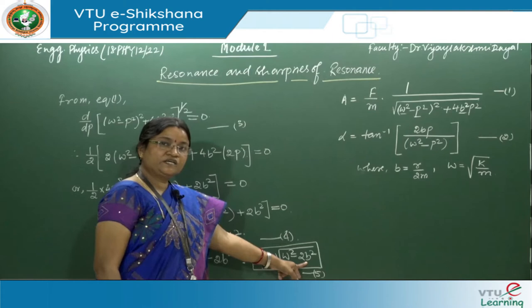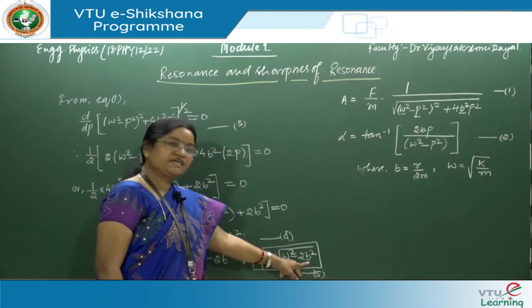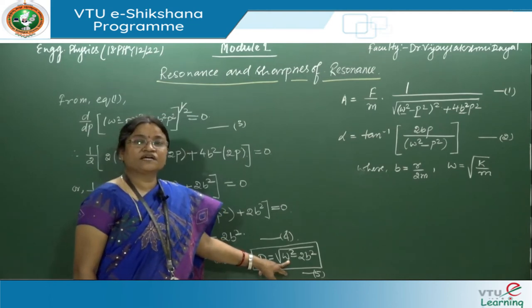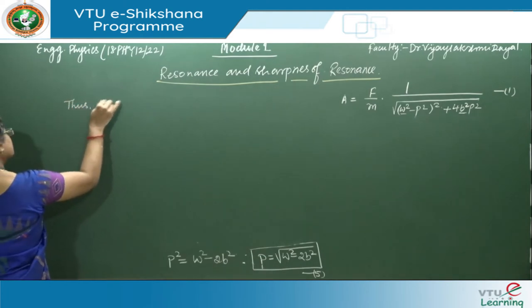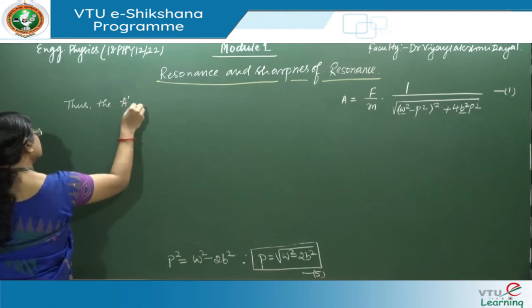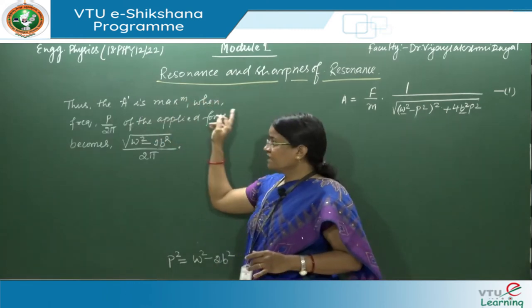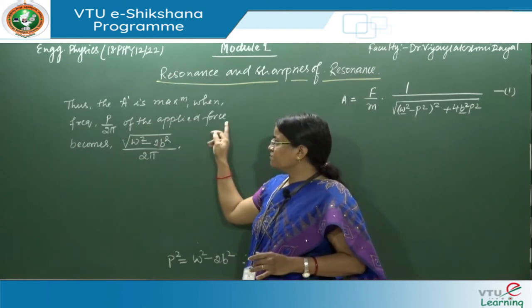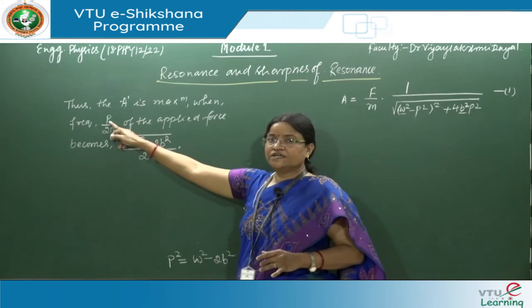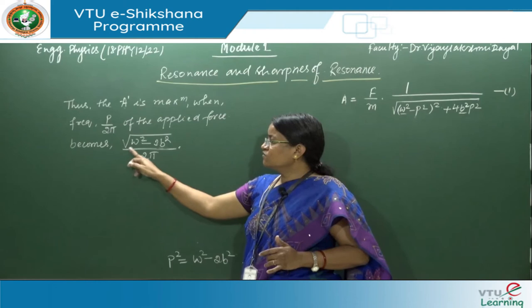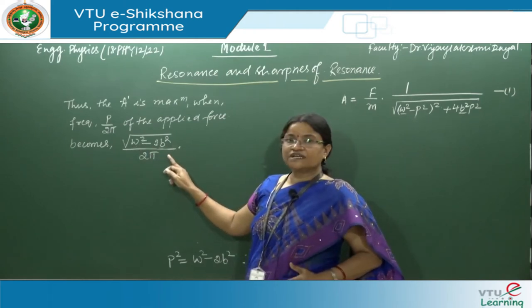If condition one is satisfied — that b must be minimum, nearly equal to zero — we get p equal to omega, confirming the resonance frequency and hence maximum amplitude. Thus, the amplitude is maximum when the linear frequency p by 2 pi of the applied force equals square root of (omega squared minus 2b squared) divided by 2 pi, where p is the angular frequency.